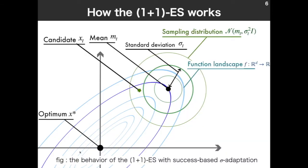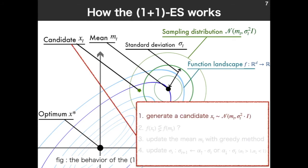Next, I explain the behavior of the (1+1)-ES in this figure. This is two-dimensional search space. Blue line is the level set of the objective function f, or the function landscape. And this black point is the optimum of f. And the (1+1)-ES exploits the sampling distribution of this normal distribution with mean m_t, t is the algorithm step, and it has standard deviation σ_t. Here, I is the identity matrix. So, as this green circle indicates the distribution, this normal distribution is isotropic one.